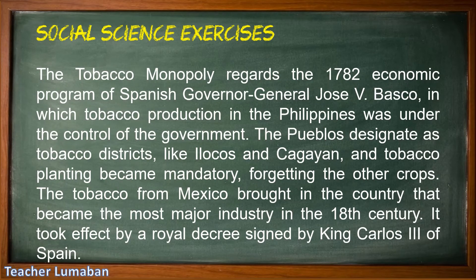The tobacco monopoly regards the 1782 economic program of Spanish governor general Jose Basco, in which tobacco production in the Philippines was under the control of the government. Pueblos designated as tobacco districts, like Ilocos and Cagayan, made tobacco planting mandatory over other crops. Tobacco from Mexico became the most major industry in the 18th century. It took effect by a royal decree signed by King Carlos III of Spain.